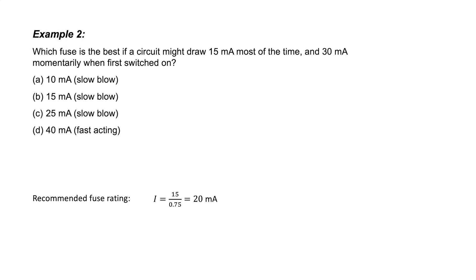If the circuit only draws 30 milliamps for a short period of time when you're first switching it on, the slow blow fuse won't have enough time to blow. This is exactly why sometimes slow blow fuses are used. C is the correct answer.